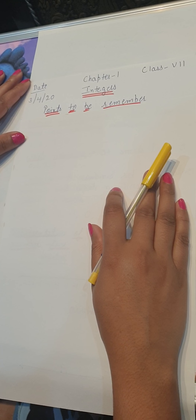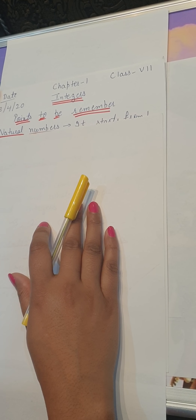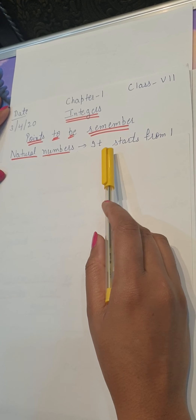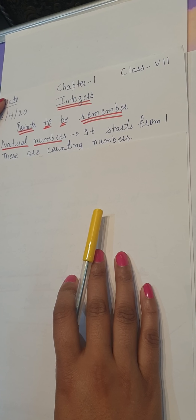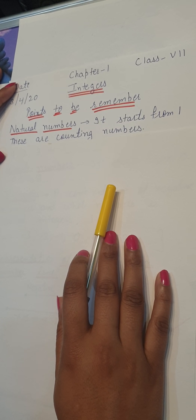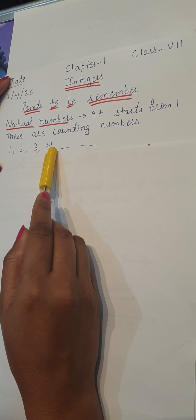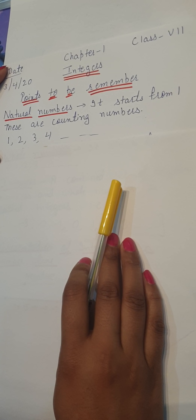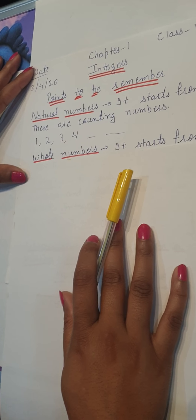First we will write points to be remembered. Our first point is natural numbers. As you know, natural numbers start from 1 and are also called counting numbers. These are the counting numbers like 1, 2, 3, 4 and so on. So natural numbers are the counting numbers.